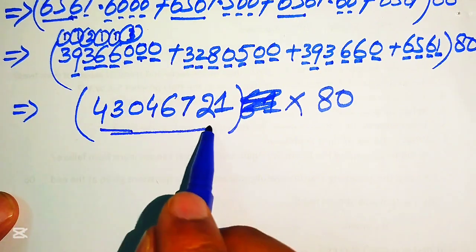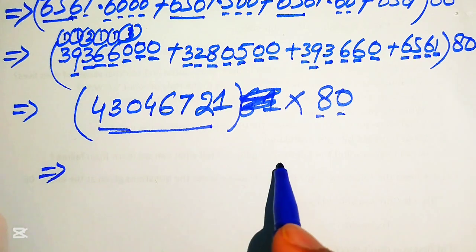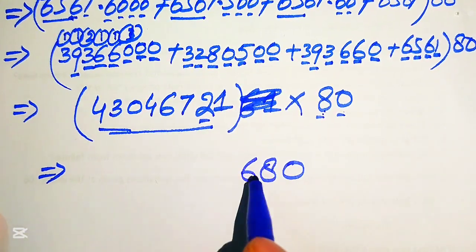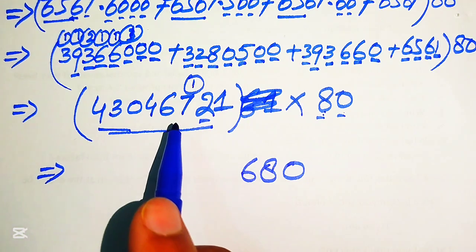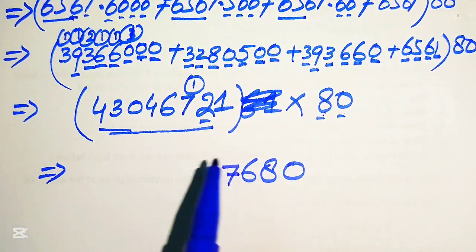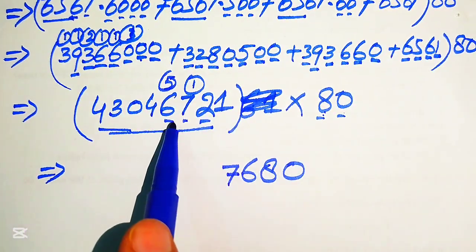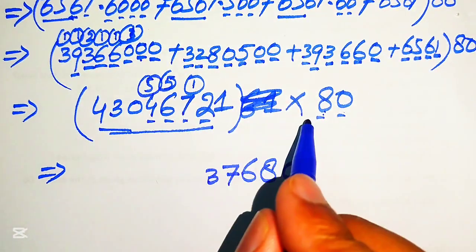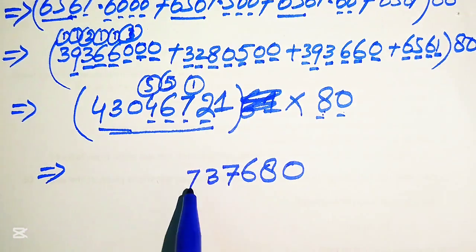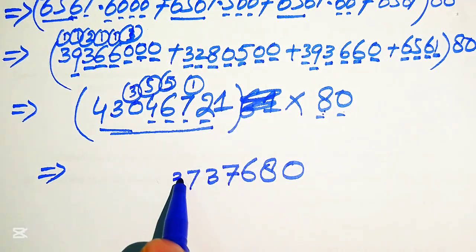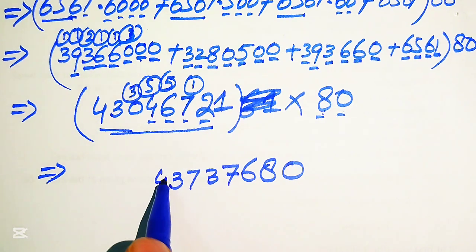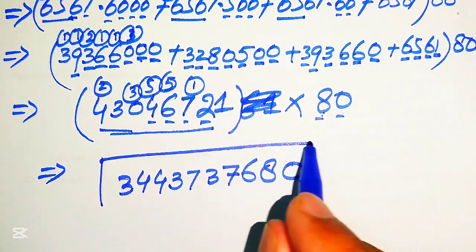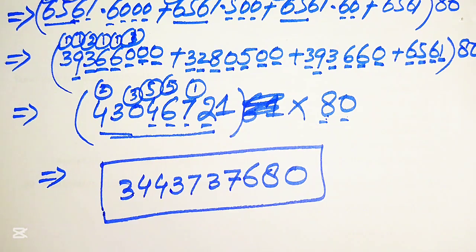Now in the next step we multiply 43,046,721 by 80. We treat this as a two-digit multiplication: the zero gives a trailing zero, then 8 times 1 is 8, 8 times 2 is 16 write 6 carry 1, 8 times 7 is 56 plus 1 is 57 write 7 carry 5, 8 times 6 is 48 plus 5 is 53 write 3 carry 5, 8 times 4 is 32 plus 5 is 37 write 7 carry 3, 8 times 0 is 0 plus 3 is 3, 8 times 3 is 24 write 4 carry 2, 8 times 4 is 32 plus 2 is 34. This gives us our final answer. Thank you so much for watching this video — please subscribe to my channel for more exciting videos.